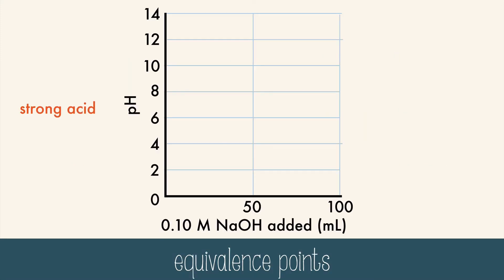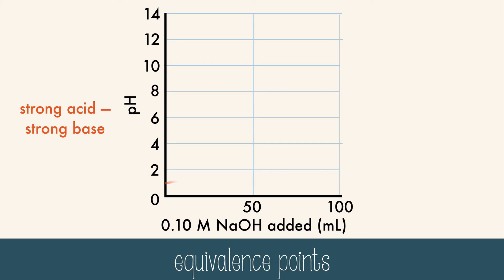Here's a graph of a titration of a strong acid and a strong base, sodium hydroxide. You can see that the equivalence point is right in the middle of the vertical section of the graph at a pH of 7. But if we look at a graph of a titration of a weak acid and a strong base, the equivalence point is slightly more basic, at a pH of about 9. The salt produced causes more hydroxide ions to be produced, resulting in a more basic equivalence point.